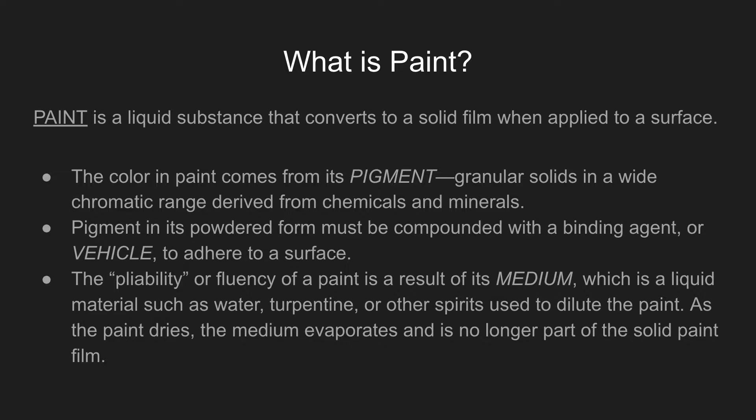The color in paint comes from its pigment — granular solids in a wide chromatic range derived from chemicals and minerals. Do you remember talking about pigment with the pastels and crayons? These are minerals or chemicals that are mined and extracted from around the world — some from plants, but many from rare stones and mineral deposits. Pigment in its powdered form must be compounded with a binding agent or vehicle to adhere to a surface. Vehicle is what carries the pigment.